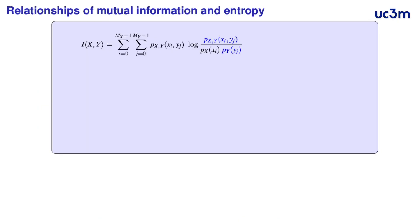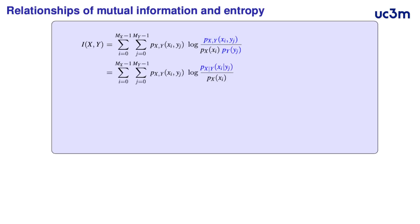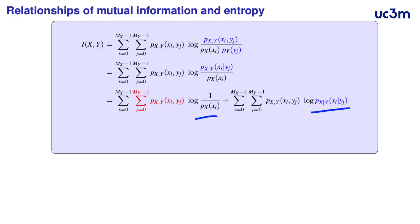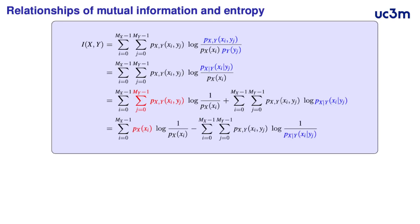Now we are going to see that the mutual information is related to the entropy. Starting from the definition of the mutual information and using Bayes' rule to identify the conditional distribution of x given y, we can separate the logarithm of the ratio into the addition of two logarithms. Taking into account that the sum over every value of y of the joint probability is the marginal probability of x, this expression reduces to the entropy of x and the conditional entropy of x given y.